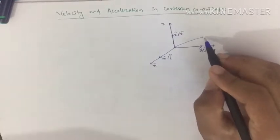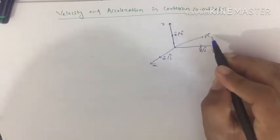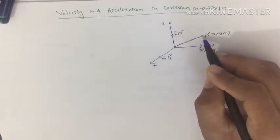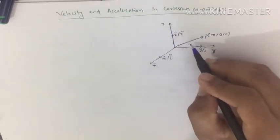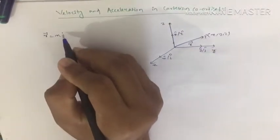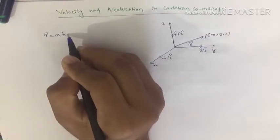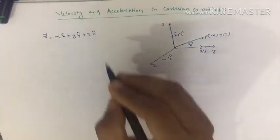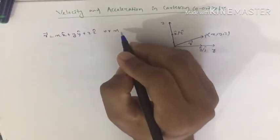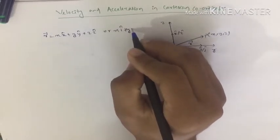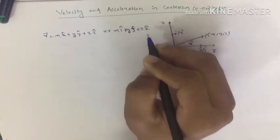So if any vector is given, say the position of this vector is x, y, z, then its position vector can be written as r-vector. Here r-vector equals x·x-cap plus y·y-cap plus z·z-cap, or equivalently xi-cap plus yj-cap plus zk-cap.